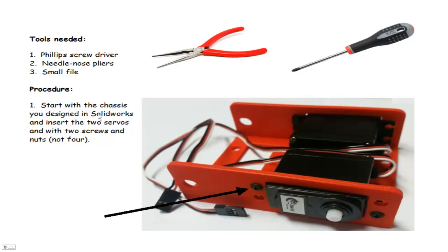Procedure. We're going to start with the chassis, and we designed this in SolidWorks. We're going to insert the two servos on either side. We're going to just use two screws instead of four, even though we have four holes here for the fasteners. I'm just going to use a couple. These secure it pretty well. They're not going to come out of there.